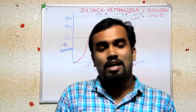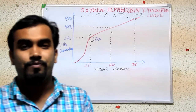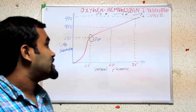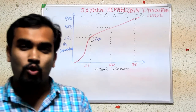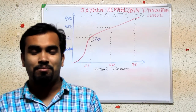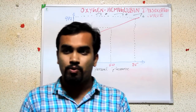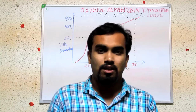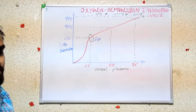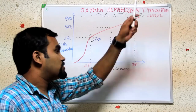Today we will continue with the lecture on physiology. We are going to discuss a small topic — the oxygen-hemoglobin dissociation curve. This is a small topic, but I know you all are confused with it. There is no need for confusion; it's very easy. Let me briefly explain what the oxygen-hemoglobin dissociation curve is.